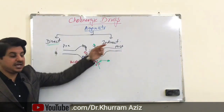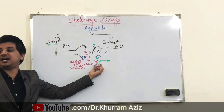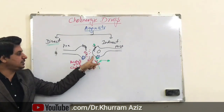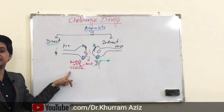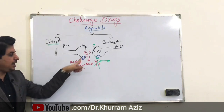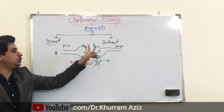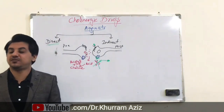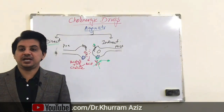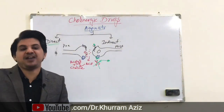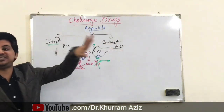Indirect-acting drugs are drugs that block or inhibit this enzyme — acetylcholinesterase. When this enzyme is inhibited, acetylcholine is not degraded back into acetate and choline. Its half-life is therefore increased, and it can bind to the receptors for longer time periods. That is why these drugs are indirectly involved in inducing cholinergic effects.